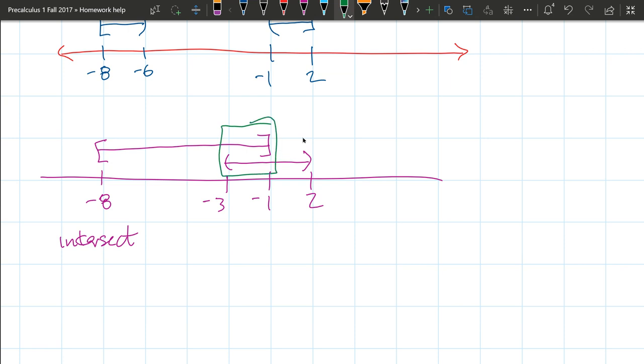We have to be a little bit careful about exactly where they intersect. You can see clearly it's from negative 3 to negative 1. Let's look at negative 3. Negative 3 is not in the bottom set, so negative 3 has to be excluded. It is in the top set, but it's not in the bottom set.